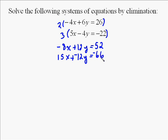When we add these two together, the 8x and the 15x, the signs are different, so you subtract and it gives you a positive 7x. The 12y minus 12y just goes away. You can just cross that out. 52 minus 66 will give you negative 14. So you get 7x equals negative 14, which is very easy to solve. Divide both sides by 7, you get x equals negative 2.